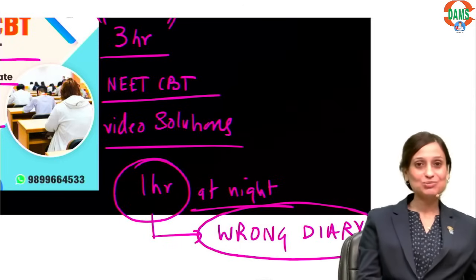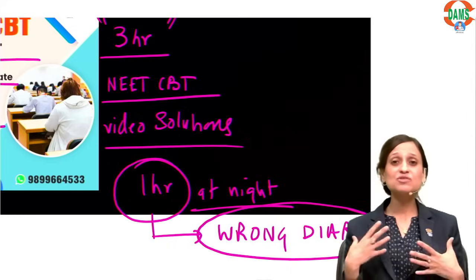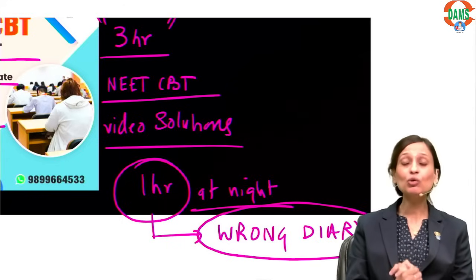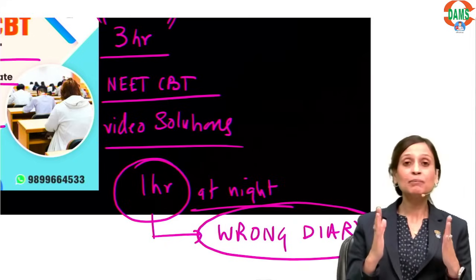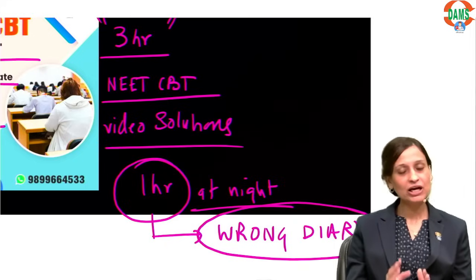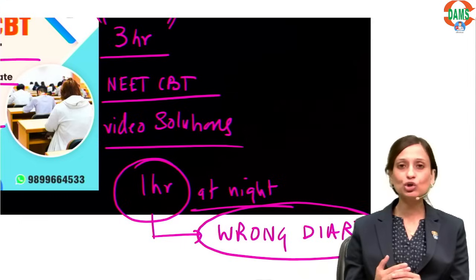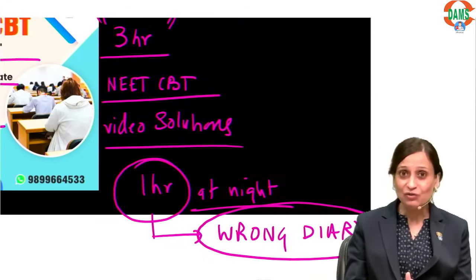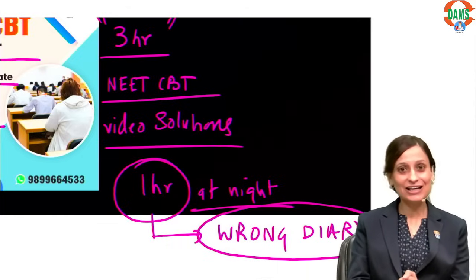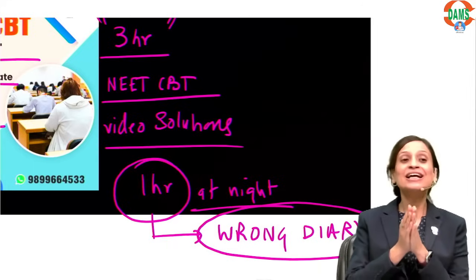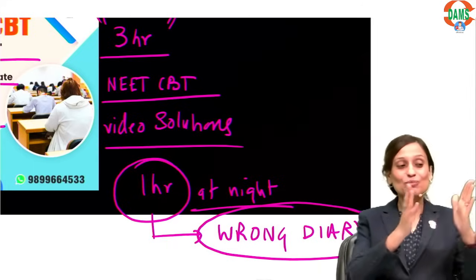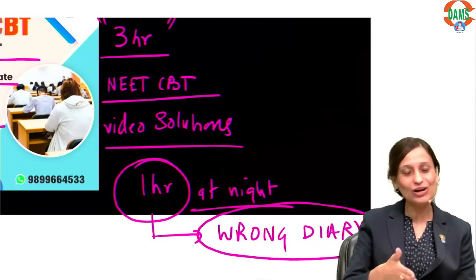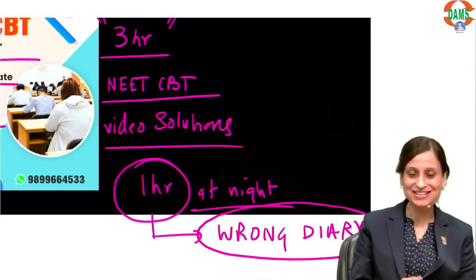If doing a wrong diary for all tests feels overwhelming, begin with grand tests — that is where the wrong diary is most important. Even if you skip it for class tests, TND papers, or SWTs initially, that's okay. Start with the 3-column strategy for your bottom 3 GT subjects, and between one GT and the next, revise the content-based mistakes in the first column.